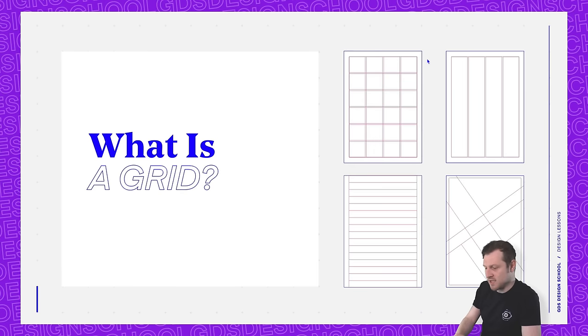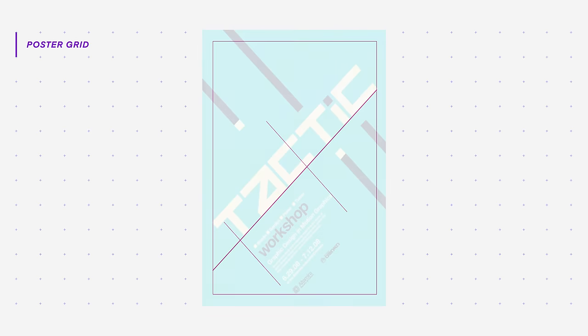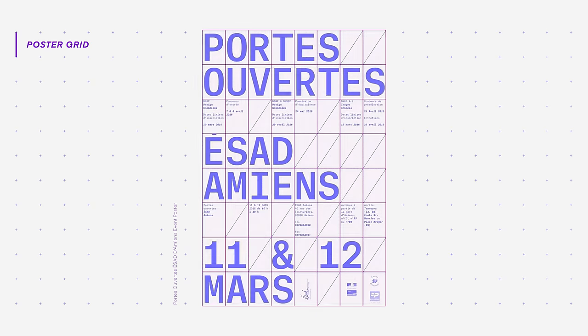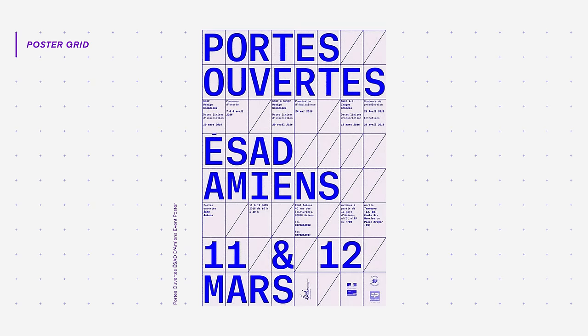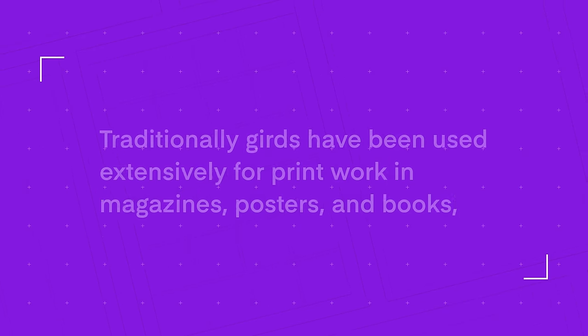So what is a grid? Well, in design, a grid is an underlying structure that can be used to align and contain visual elements. Most often, grids are invisible frameworks design can be based on, but in some instances, a grid can be part of a visual design. Traditionally, grids have been used extensively for print work in magazines, posters, and books.